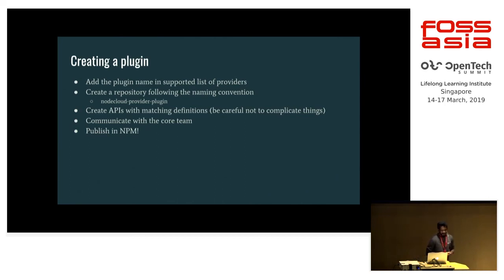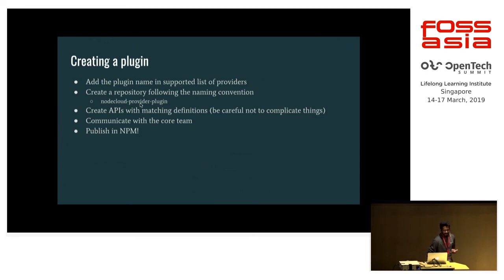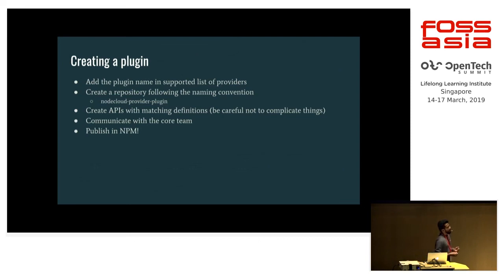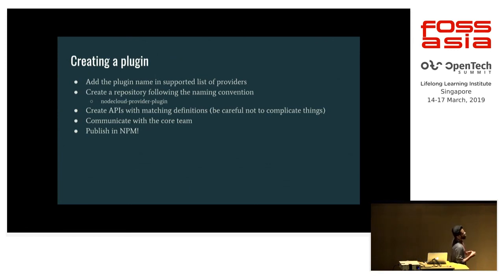Then create a repository using the naming convention similar to webpack plugins: nodecloud-X-plugin. Code your APIs in that repository. Communicate with the core team via the NodeCloud core repository — tell us what you're going to do and we'll work with you on the plugin. As the last step, just publish it to NPM and share it with everyone.